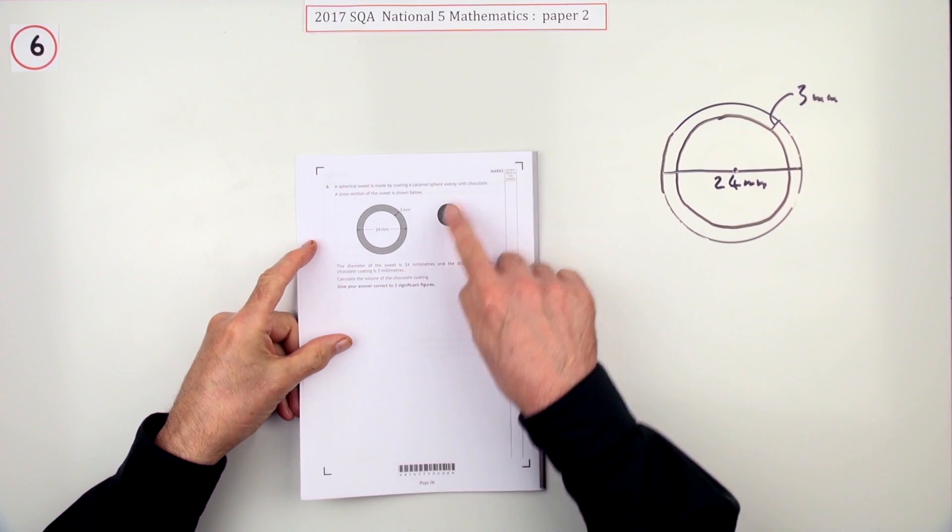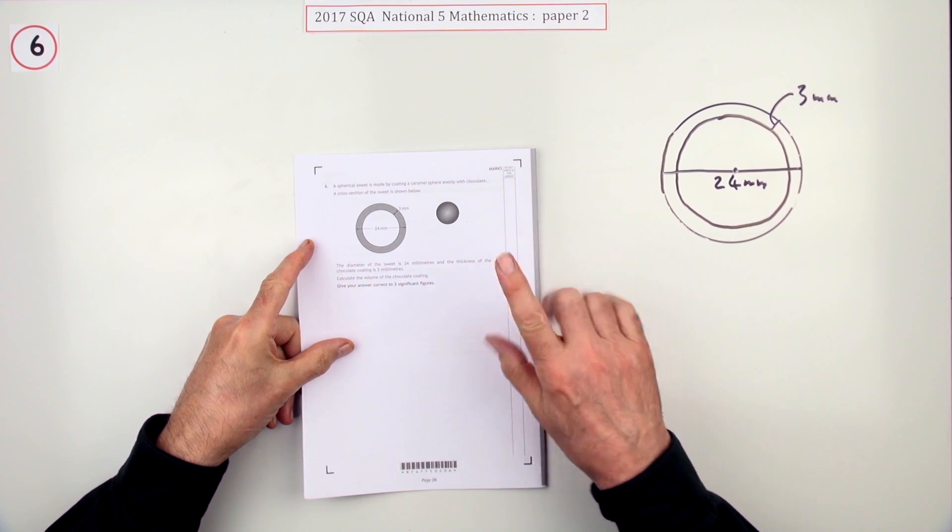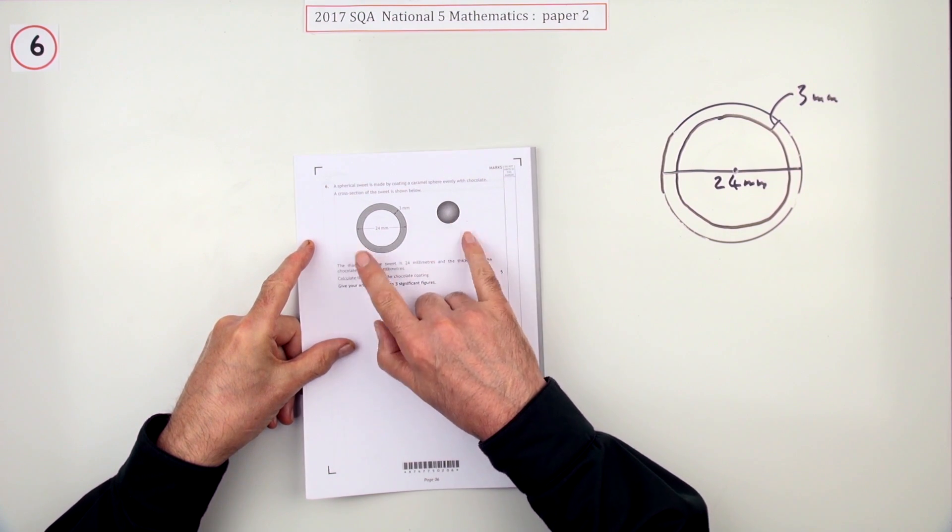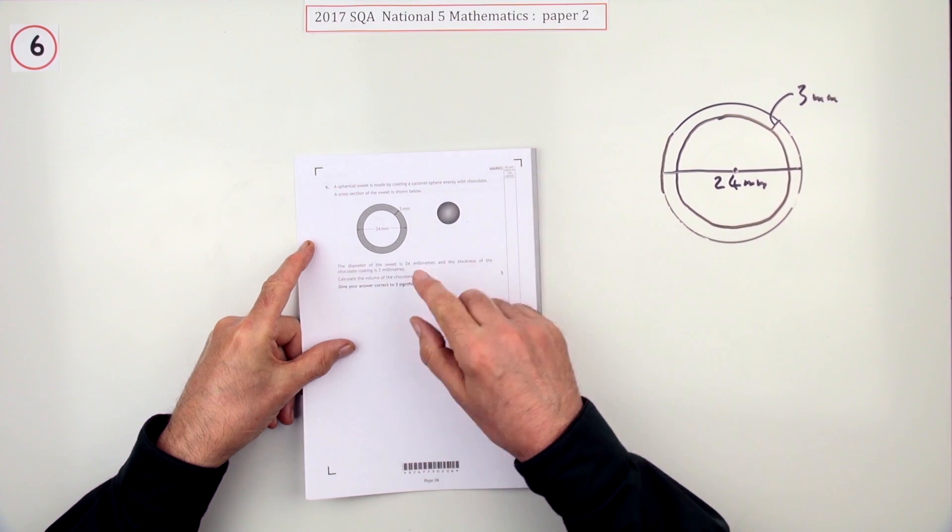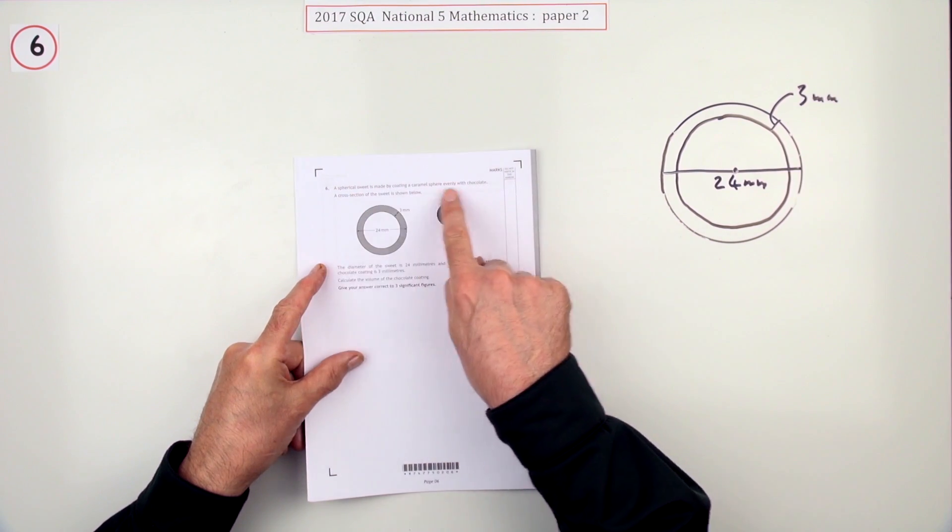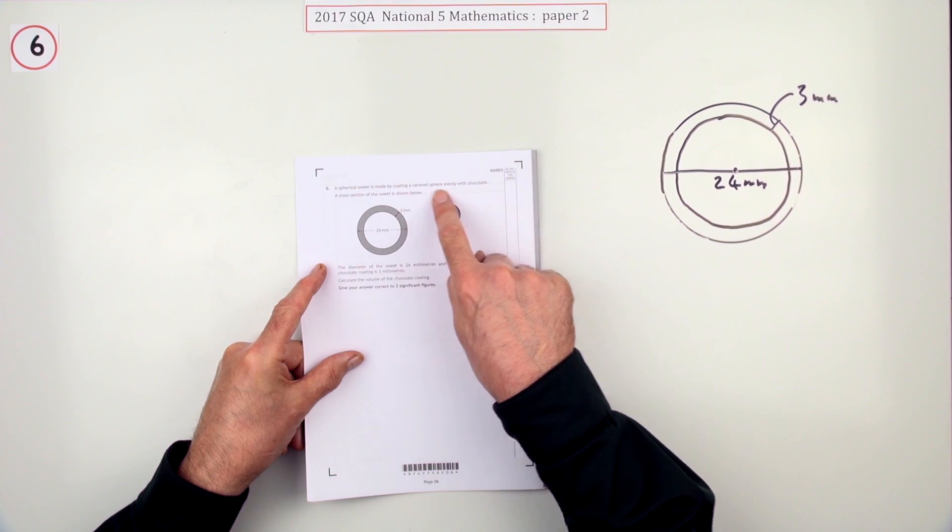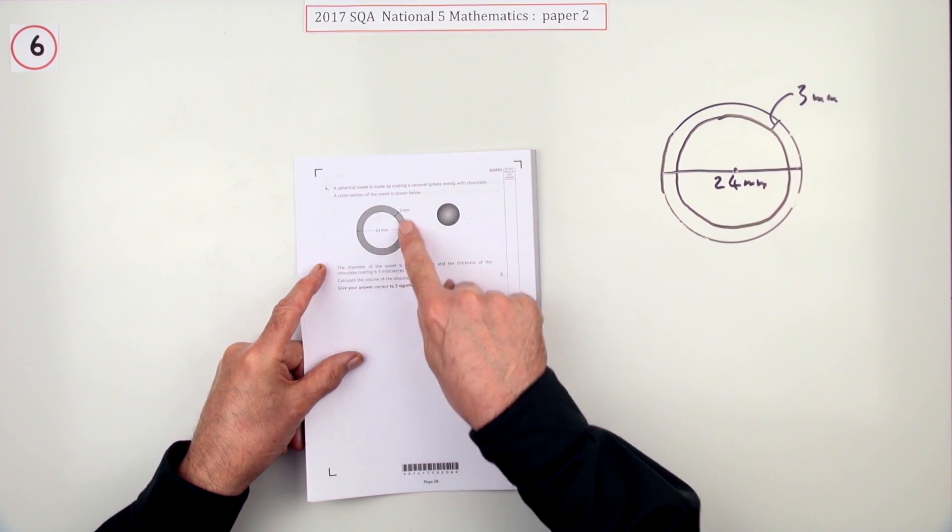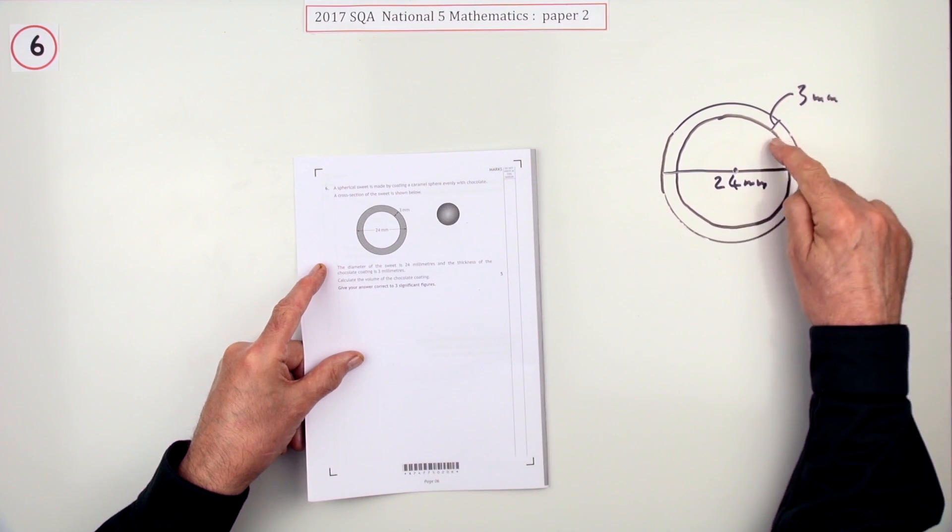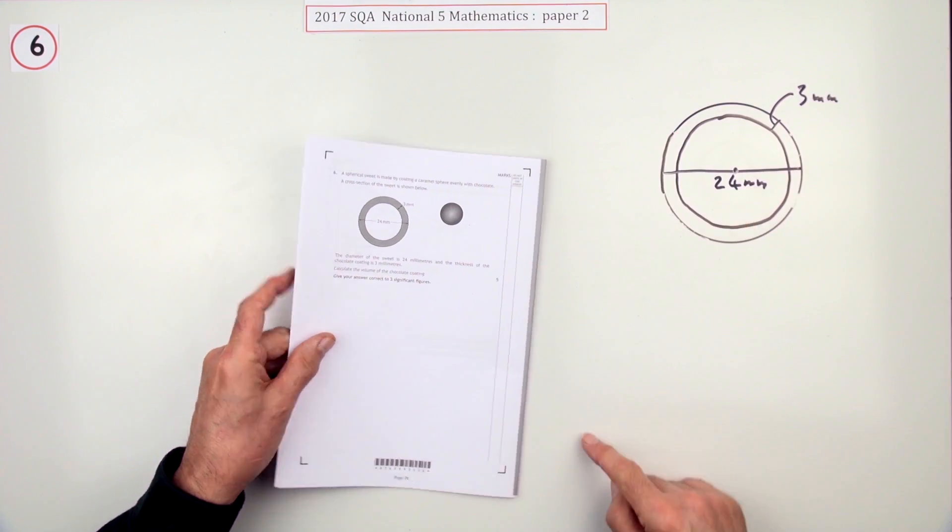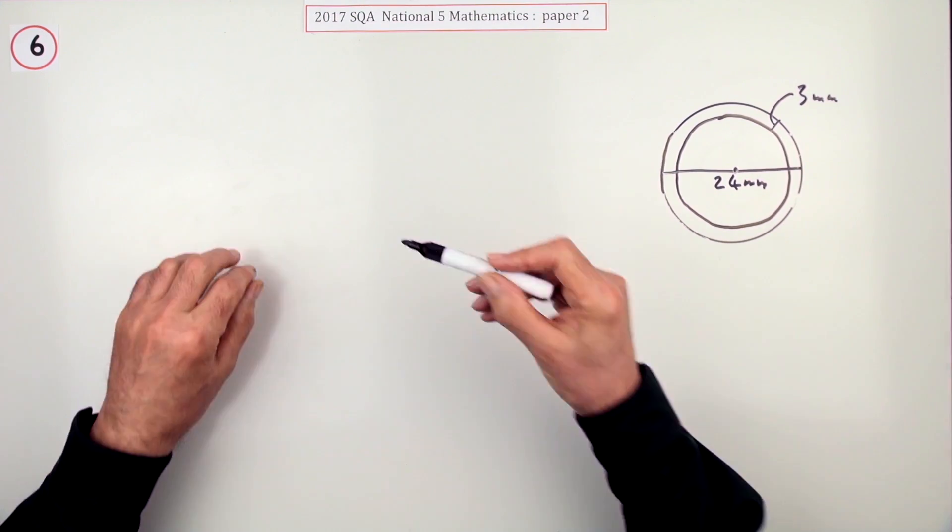Number 16 from paper two of the 2017 National 5, volume question for five marks. It's a spherical sweet which is made up of an inner caramel and a coating of chocolate which is 3mm thick. What's the volume of that coating?